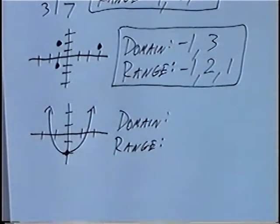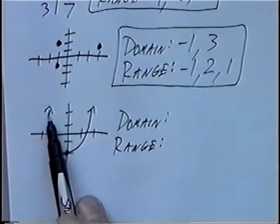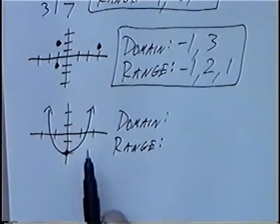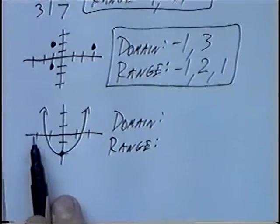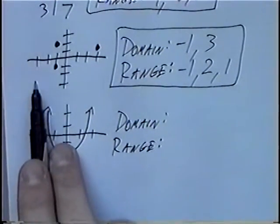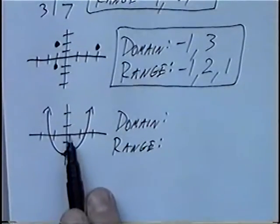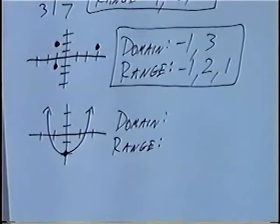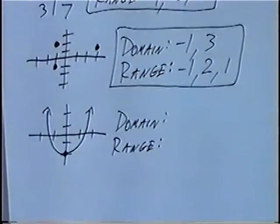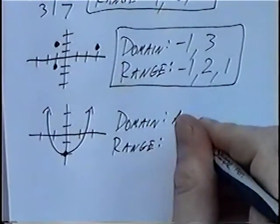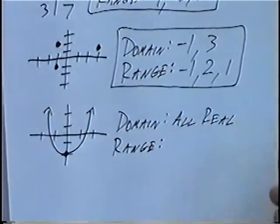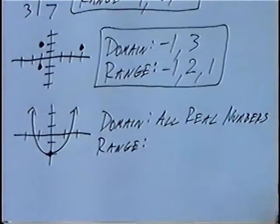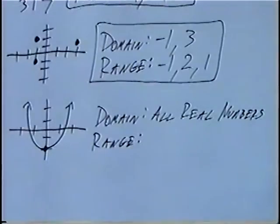The domain again is all the X-values. Looking at this graph, the line consists of many or infinite points. All those points contain any X-value on the graph. You can take any negative number — if you go up high enough, the graph will go up to that point and the X-value will be on the graph. Same for any positive value. So since every X-value, positive and negative, is on the graph, the domain will be all real numbers.